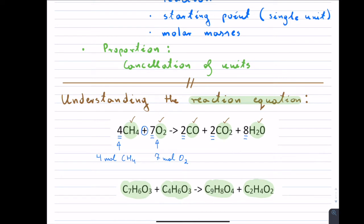Those numbers in the reaction are just simply telling you how many moles you have — that's the key takeaway. Now in the second reaction, if there is no number in front, always remember that in reality the number is one — we just don't write it. So for instance, C7H6O3 means you have just one mole of it, and it turns out you have one of each molecule in that particular reaction.